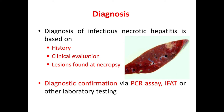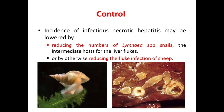Coming to the control measures. Treatment of this disease is very difficult and unrewarding, so we have to go for control measures. Incidence of this disease may be lowered by reducing the number of Lymnaea species snails, because it is the intermediate host of liver fluke, or by otherwise reducing the fluke infection of cattle.